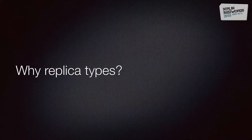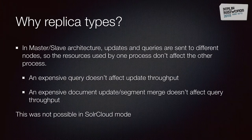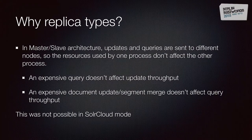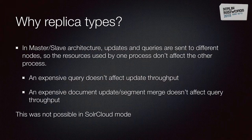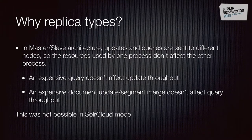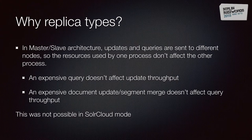So if all of this works, why do we need replica types? In master-slave, the indexing process and searching process were separated. If you had expensive documents or a spike in updates, they would not affect search latency or throughput, and vice versa — an expensive query would not affect updates. This separation was not possible in SolrCloud because every replica does everything, so expensive updates affect queries and vice versa.